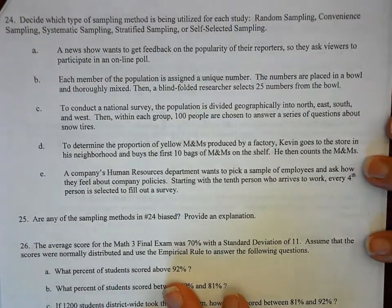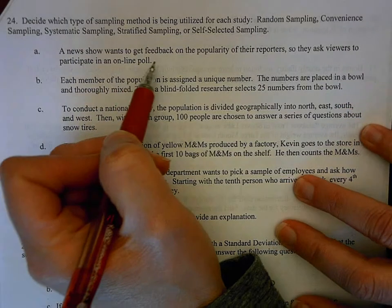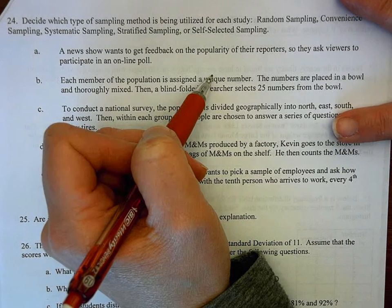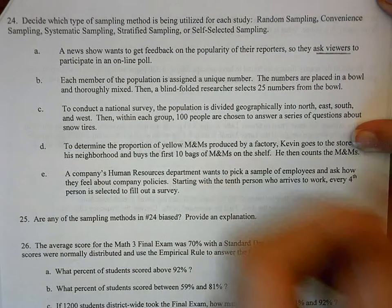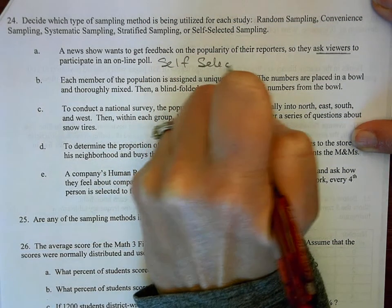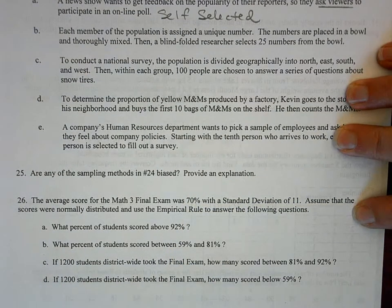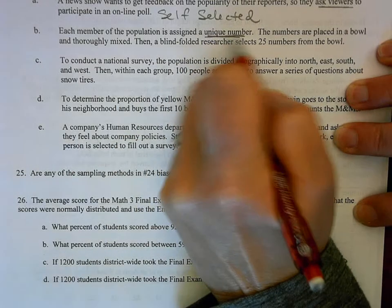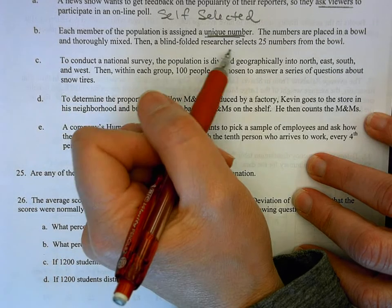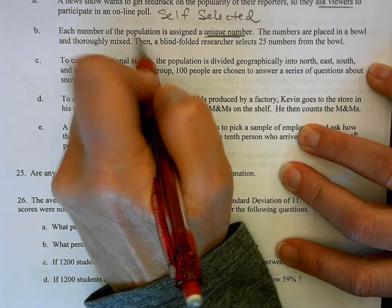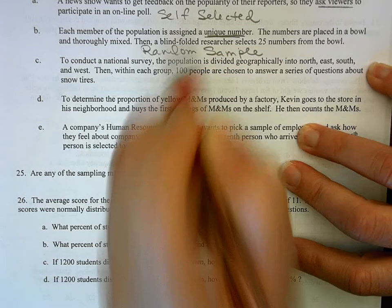Question 24 checks that you know the different types of sampling. A news show asks viewers to participate in an online poll — since viewers select themselves and volunteer, this is self-selected. For Part B, each person is assigned a unique number, placed in a bowl, thoroughly mixed, and a blindfolded researcher selects 25 numbers. That would be a simple random sample, because numbers are randomly chosen from uniquely assigned values.